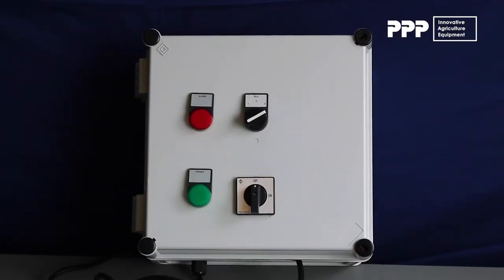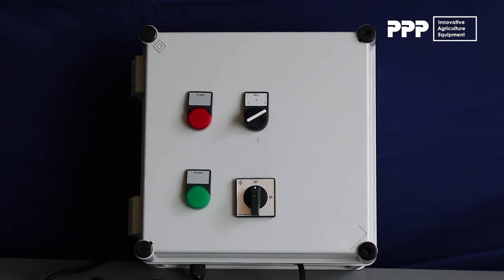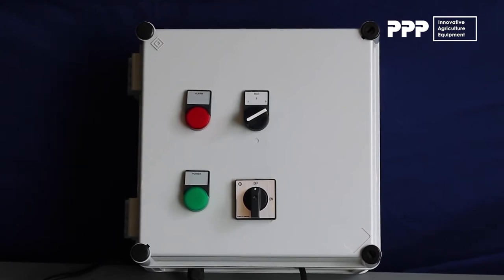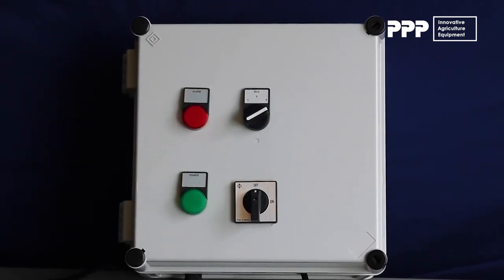This control box is for multiple silos but the single silo control box is the same except that it doesn't have the silo selection dial on the front.